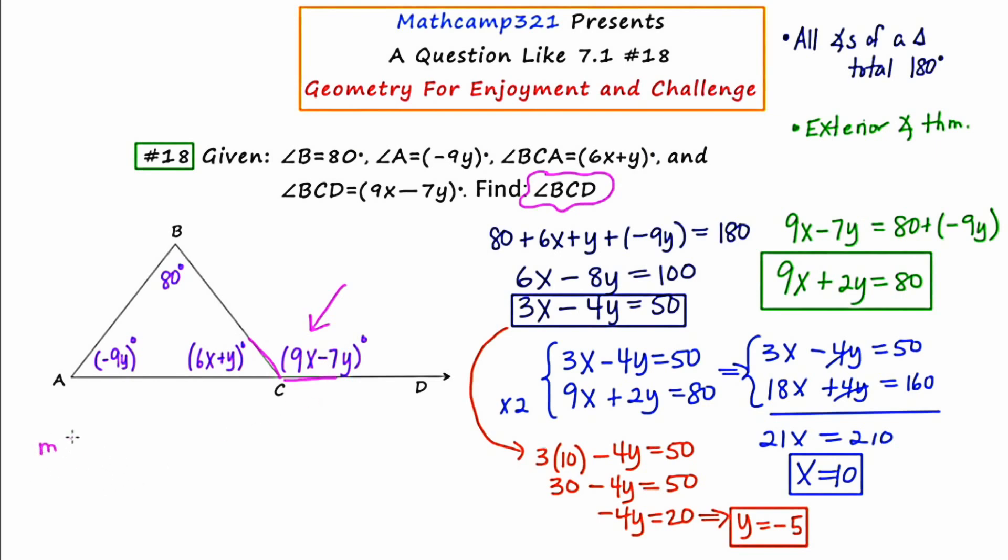So the measure of angle BCD is going to equal 9 times x, or 9 times 10, minus 7 times y, which is negative 5. So this is going to be 90 plus 35, or 125.